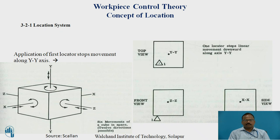Under workpiece control theory, the 3-2-1 location system and the concept of location will be discussed based on flat configuration workpieces. Location is nothing but maintaining a dimensional and positional relationship between the workpiece and the cutting tool. A locator is an element used for location. In order to constrain the degrees of freedom for a workpiece during an operation, we require location along with clamping.